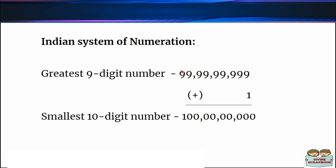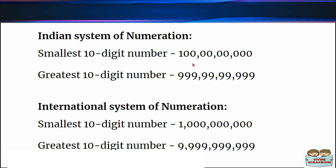If we add 1 to the greatest 9-digit number, we will get the smallest 10-digit number, which will be 100 crore. Hence, in the Indian system of numeration, the smallest 10-digit number is 100 crore, and the greatest 10-digit number is 999,99,99,999. In the international system of numeration, the smallest 10-digit number is 1,000,000,000 and the greatest 10-digit number is 9,999,999,999.